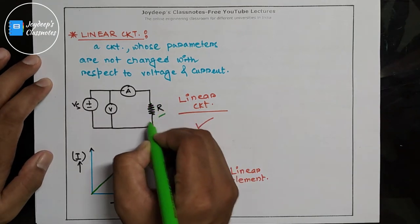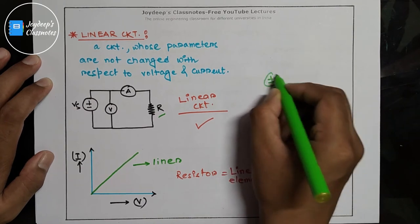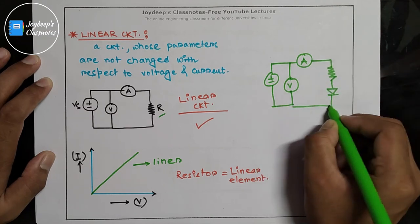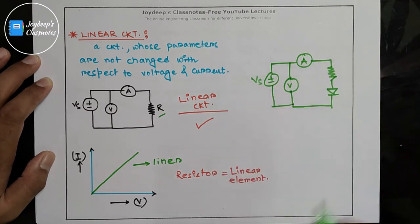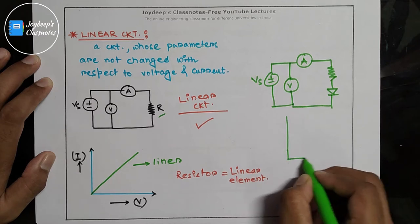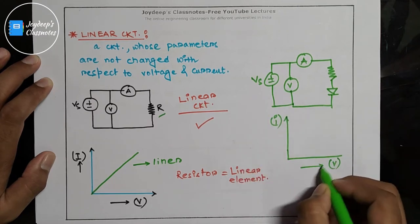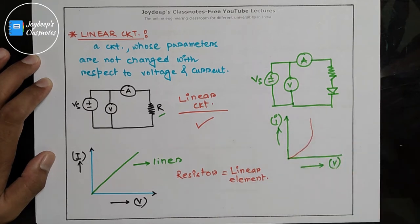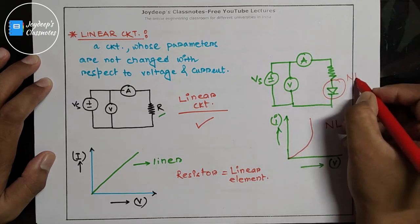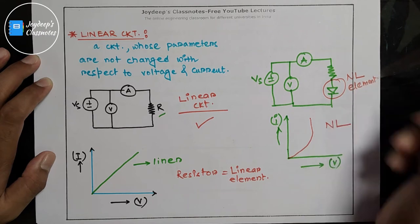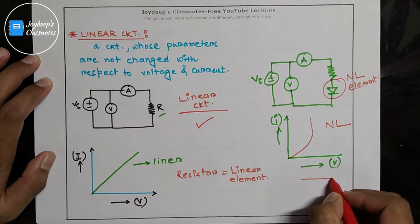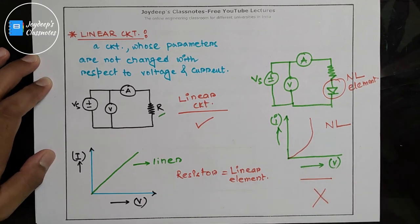But if we have chosen a diode in place of this resistor — that means the same circuit with Vs — and we want to find out the IV characteristics, you will find out that the graph will look non-linear. So that means this diode is a non-linear element. Since this non-linear element is present in this circuit, this means this is a non-linear circuit and superposition theorem is not applicable in this circuit.